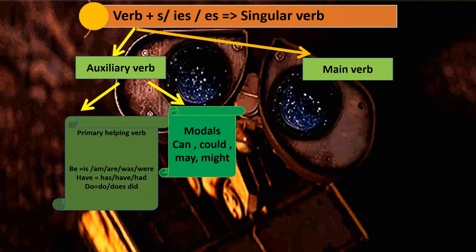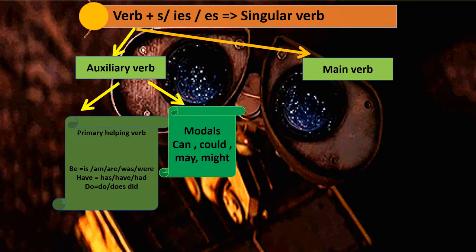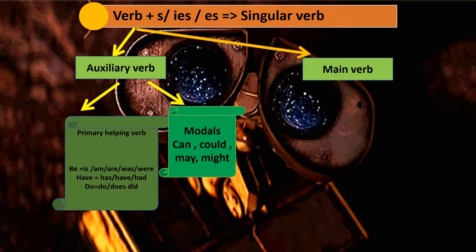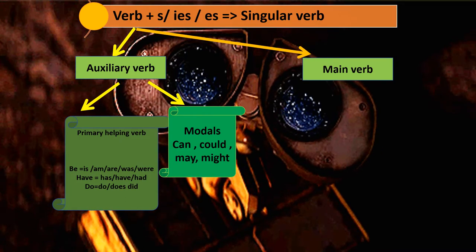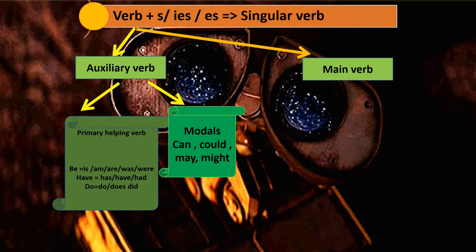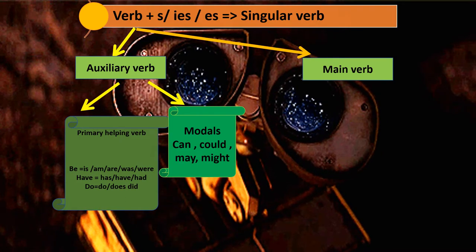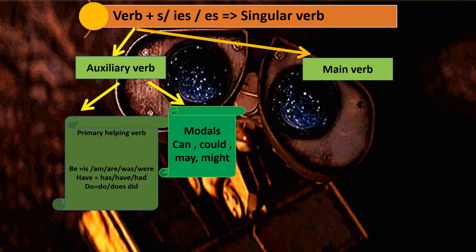Primary helping verbs also include have, has, had, do, does, and did. All of these are known as primary helping verbs.